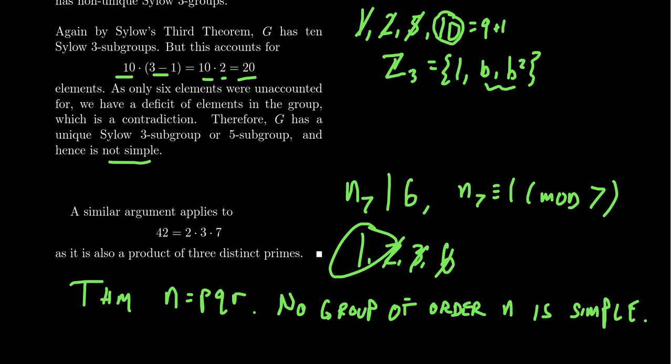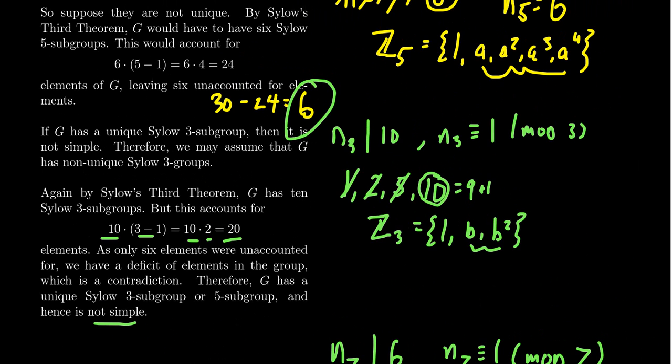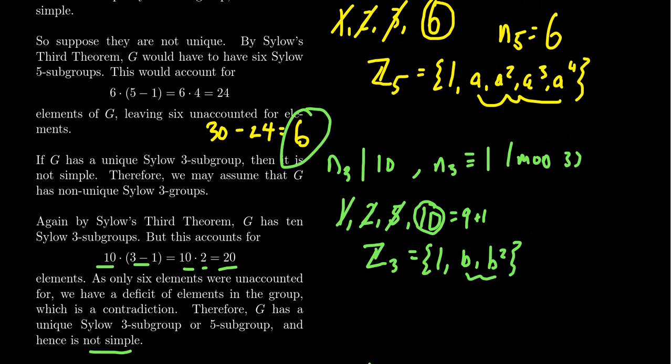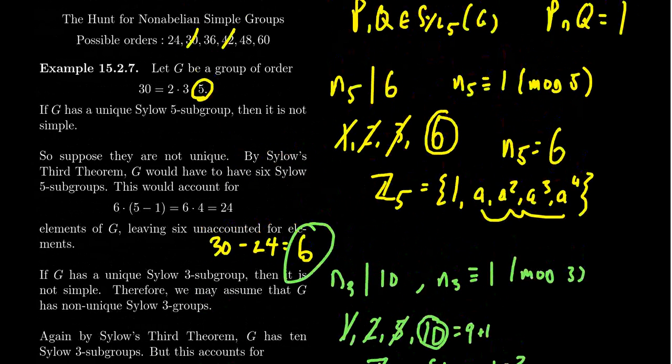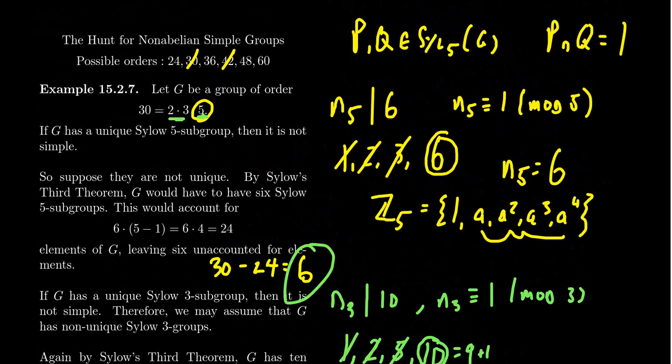Oftentimes, you get something like the following, where maybe one of the primes is too big, so that there's no opportunity to have multiple Sylow R groups in that situation, like with 42. But it could also be the case where you have 30, where when considering 5, the other number is big enough to have multiple. And then when you look at a different prime like 3, their product is big enough to have multiples. But when you start considering all of them, you're going to get too many elements in the end.